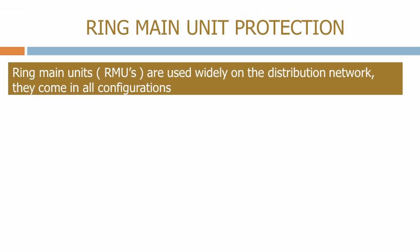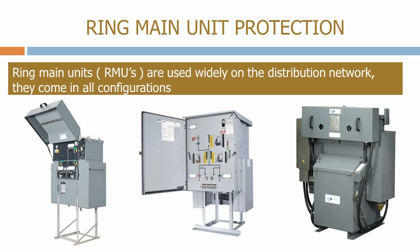Ring main units, or RMUs, are used widely on the distribution network. They come in all configurations — here are some typical examples. They are used to switch power around the network, and as their name suggests, they are normally inserted into rings formed within the network to provide the loads with different sources of supply in case something goes wrong with the network.